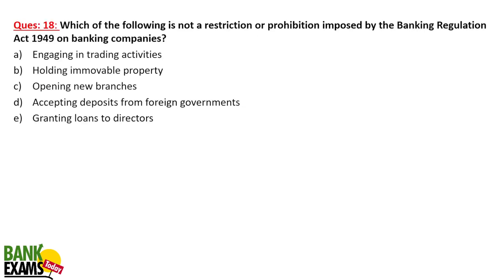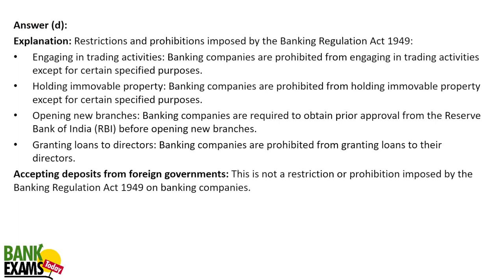Which of the following is NOT a restriction or prohibition imposed by the Banking Regulation Act 1949 on banking companies? Banking companies cannot engage in trading activities, cannot hold immovable properties, must get RBI approval before opening a new branch, and cannot grant loans to directors. Accepting deposits is permitted — it is not a restriction. These are some of the key activities prohibited for banking companies under the Act.